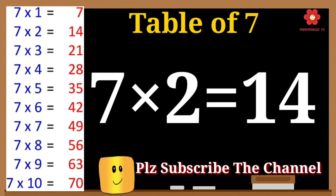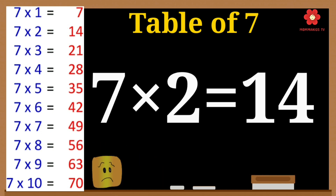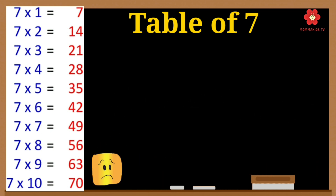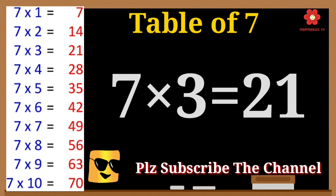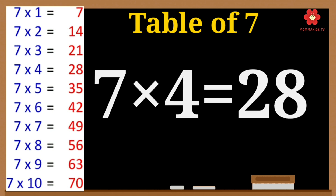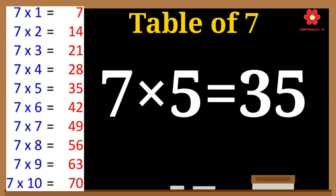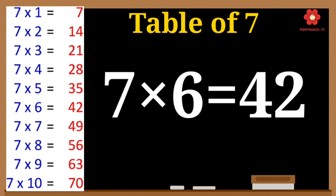7 2's are 14. 7 2's are 14. 7 3's are 21. 7 3's are 21. 7 4's are 28. 7 4's are 28. 7 5's are 35. 7 5's are 35. 7 6's are 42.